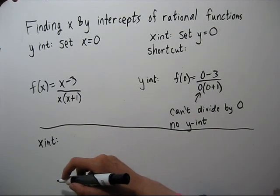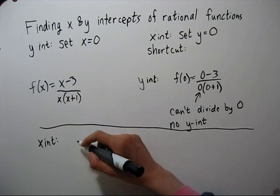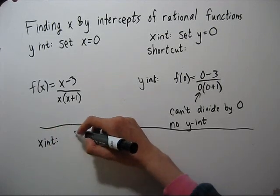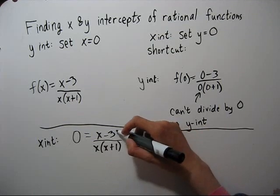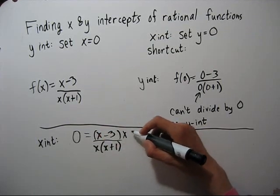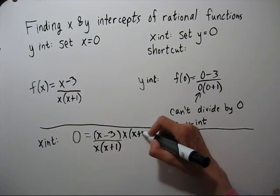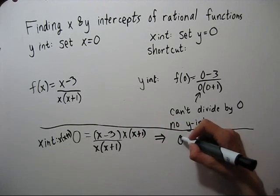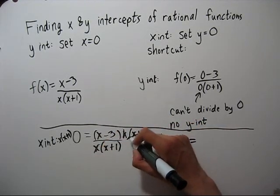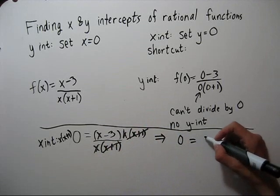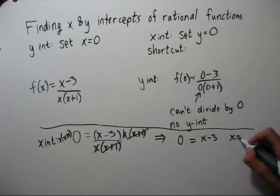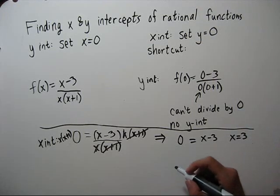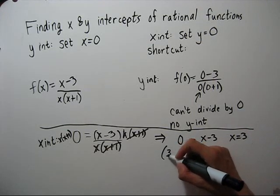Now to find the x intercept, let's set y equal to zero. Our y is f of x. Let's get rid of the denominator by multiplying both sides by x times x plus one. We get that zero equals x minus three. So x equals three. Therefore, our x intercept occurs at three zero.